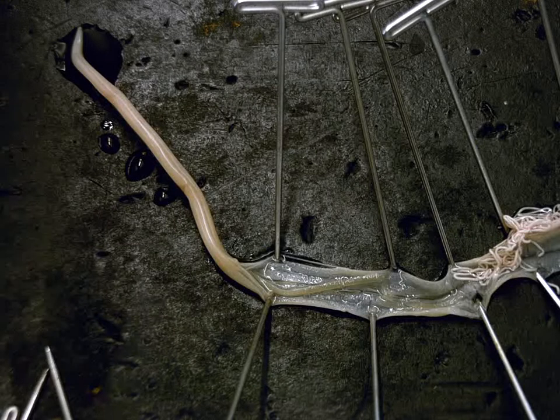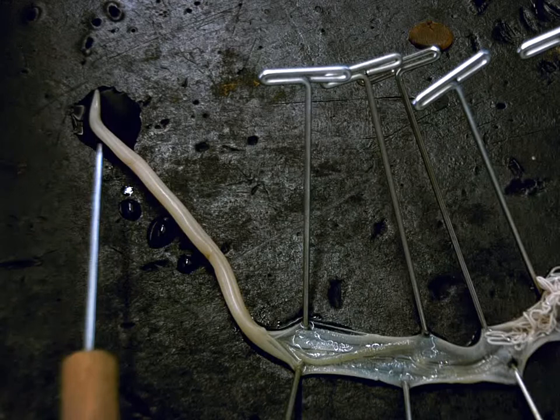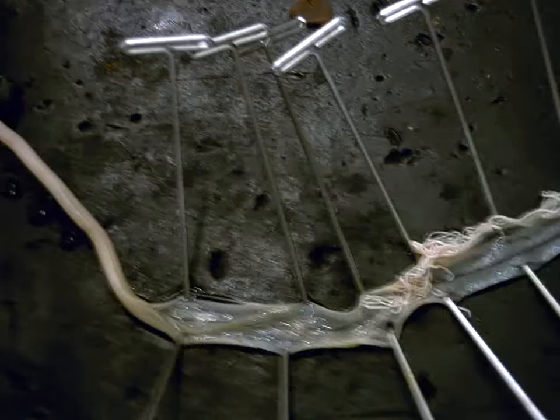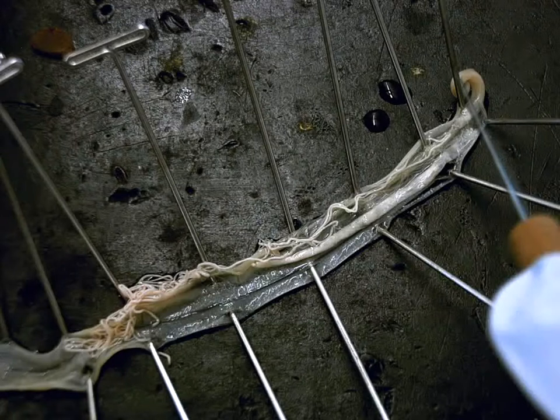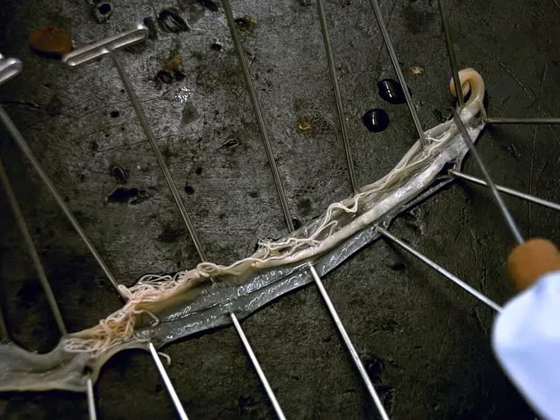And we have the anterior over here, which is where it has its mouth and three lips. And then you can see we move towards the posterior end of the worm where we see the curvy posterior tail.